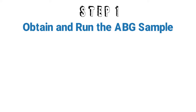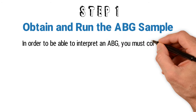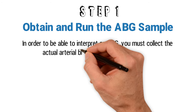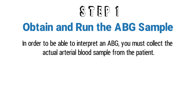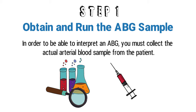Step 1: Obtain and run the ABG sample. First things first. In order to be able to see the ABG results, you must obtain an actual arterial blood sample from the patient. We'll discuss how to stick an ABG later on, but for now, let's focus on the interpretation part. After you have obtained an arterial sample, run the sample through a blood analyzer and have the results. Now we can figure out what the results mean.